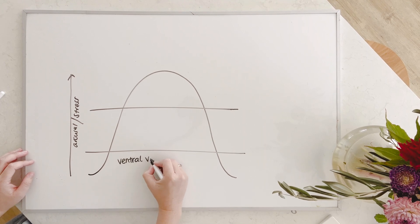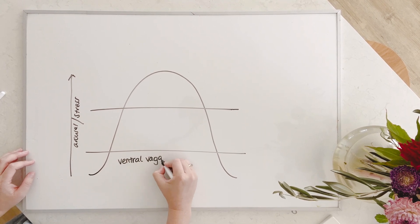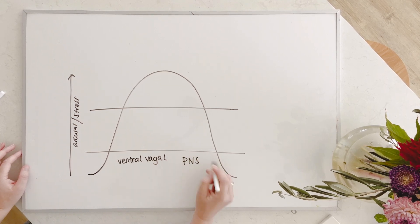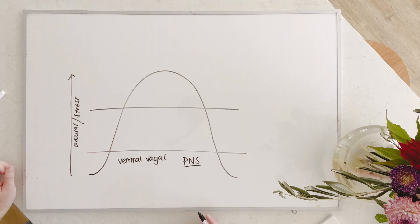So down the bottom section of the polyvagal curve is a place called ventral vagal. And you'll remember this as the place of rest, digest and restore. So this is our parasympathetic nervous system, a branch of our parasympathetic nervous system.